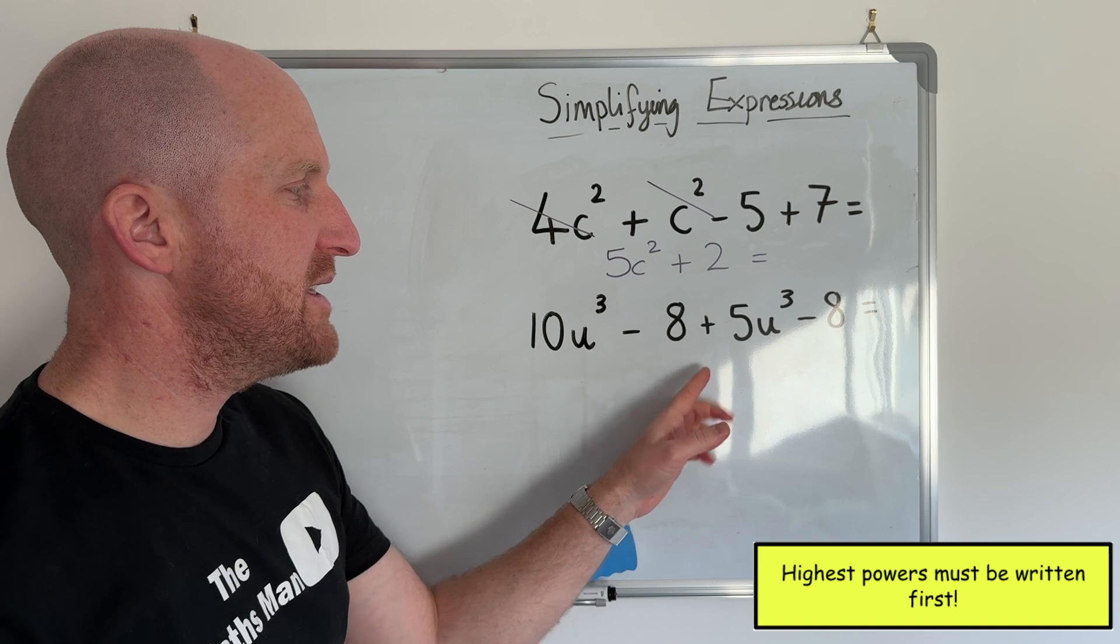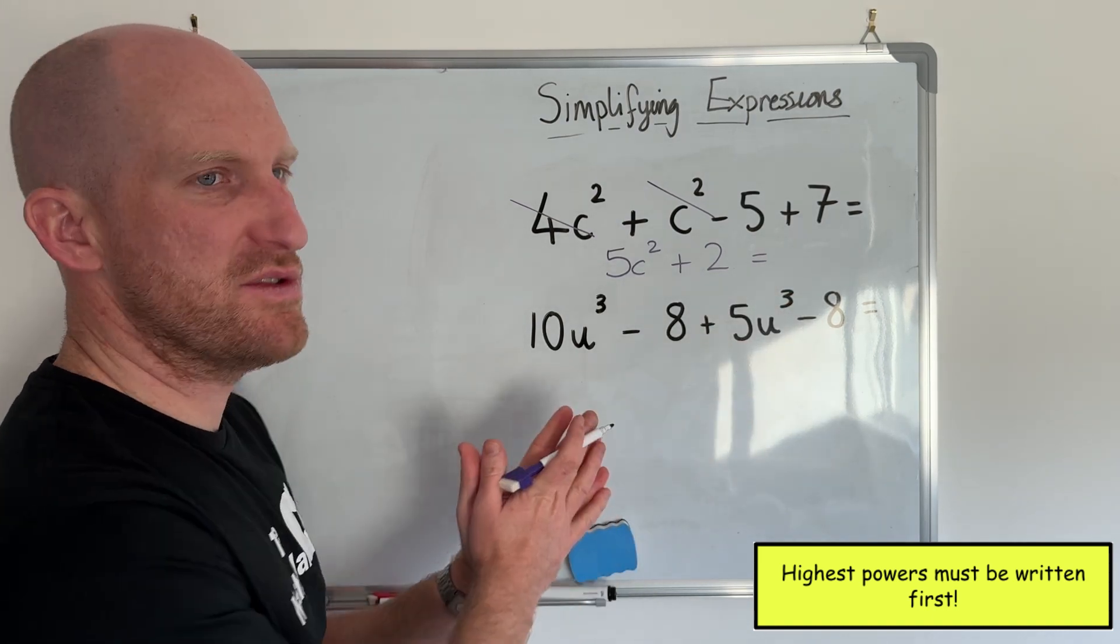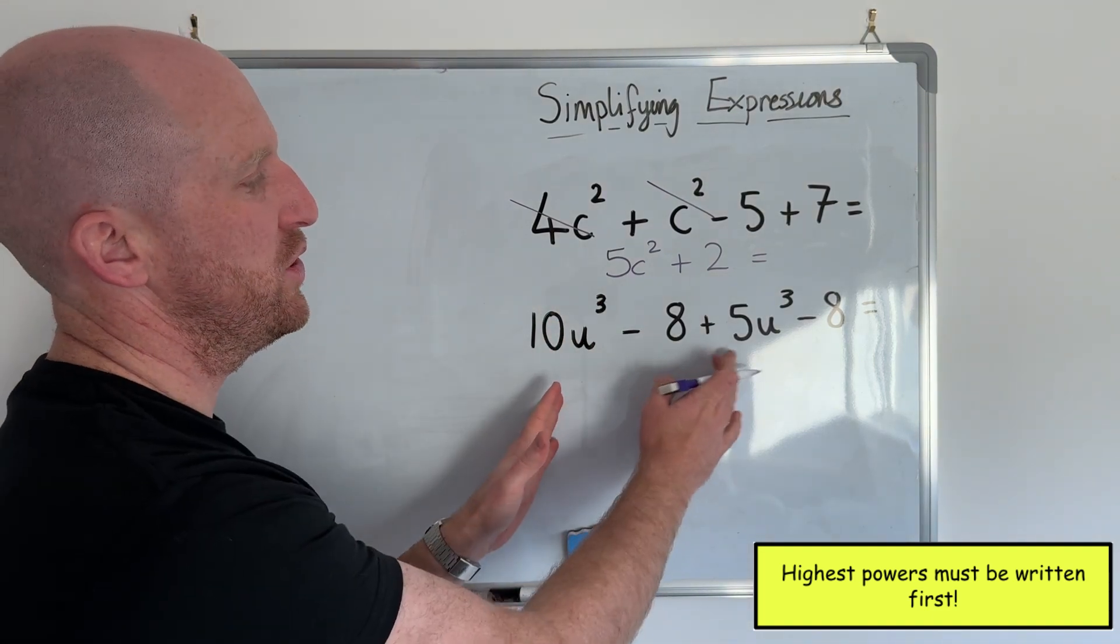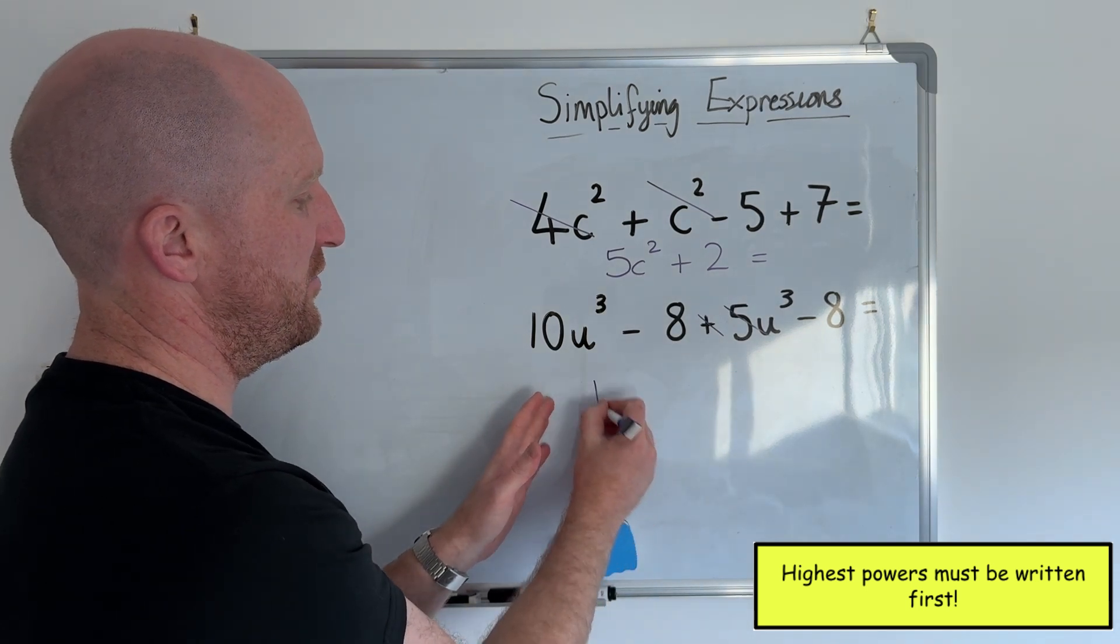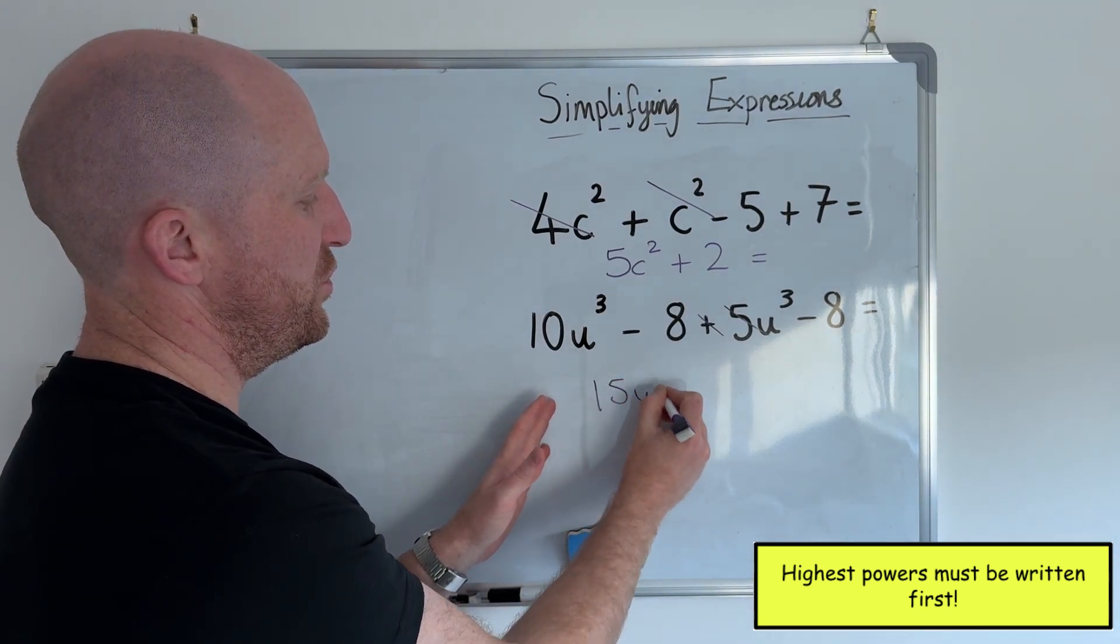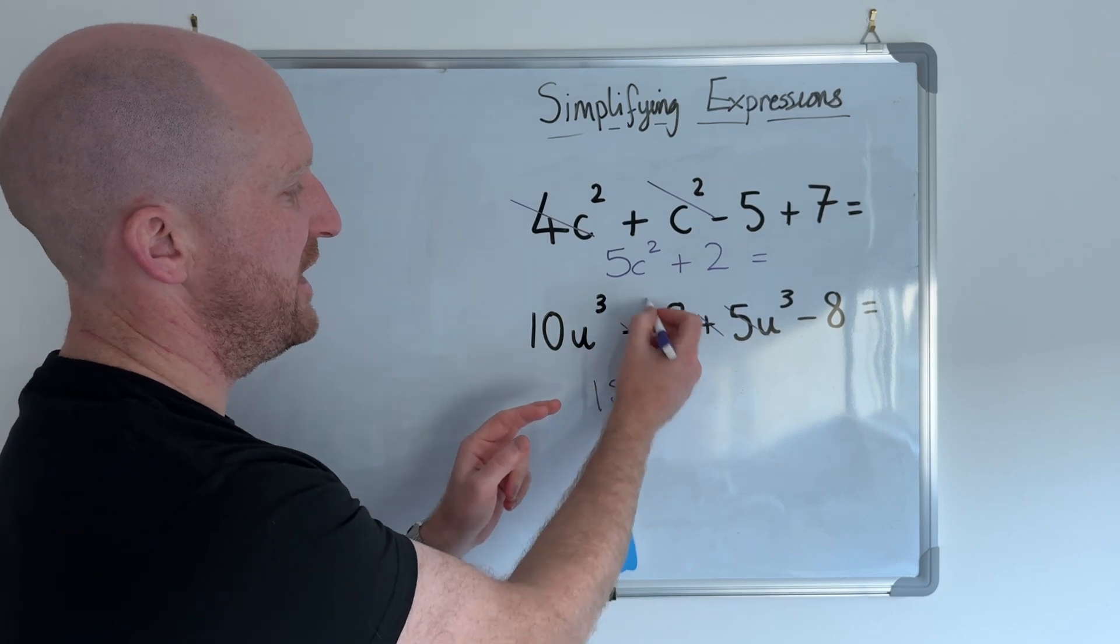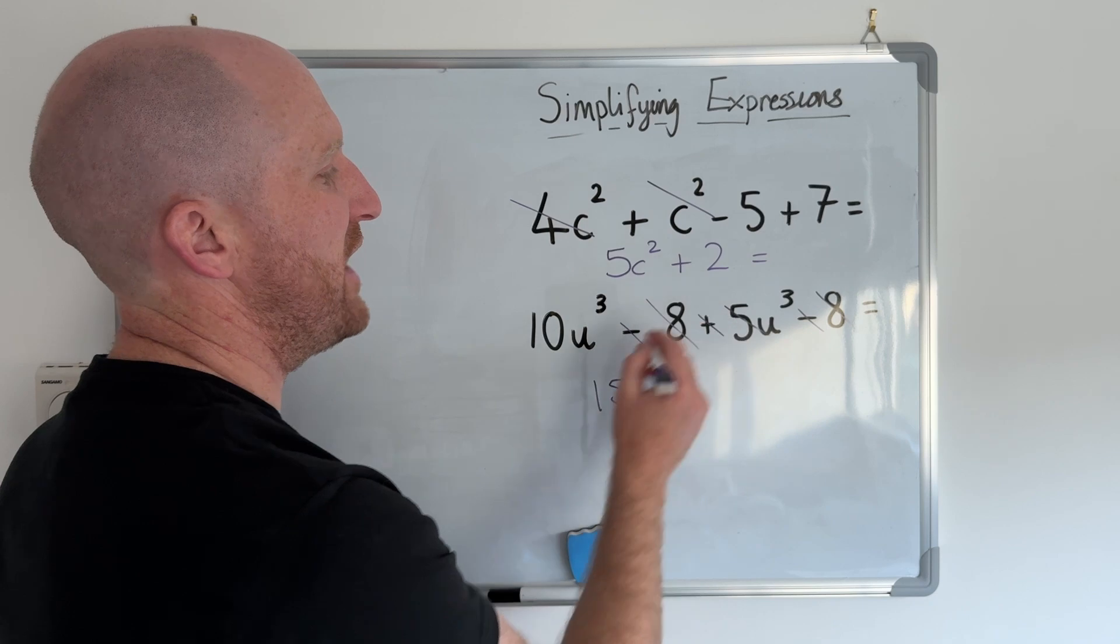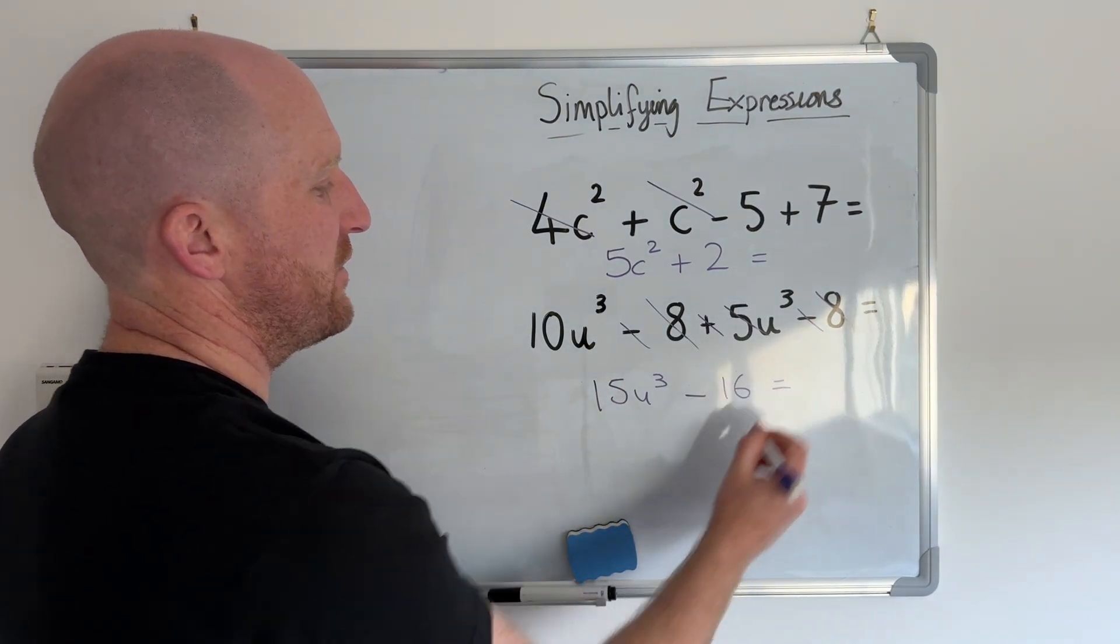And then this question here I've got 10u cubed, take away 8 plus 5u cubed, take away 8. So I'm going to deal with the u numbers first. So I've got 10u cubed plus 5u cubed, that gives me 15u cubed. And then I've got negative 8, take away 8. So negative 8, take away 8, gives me negative, take away 16.